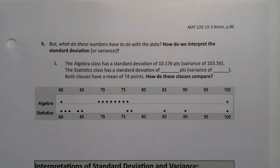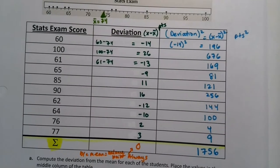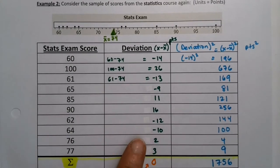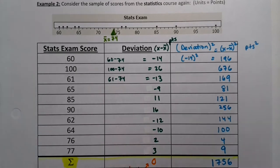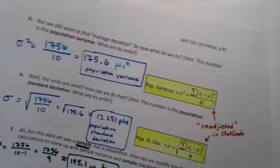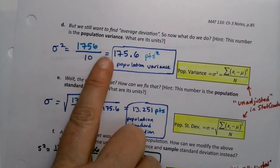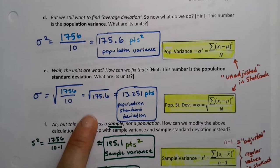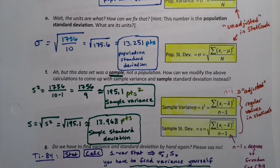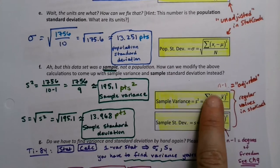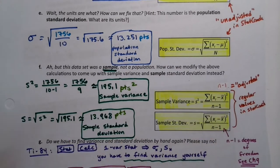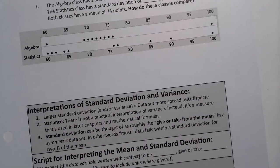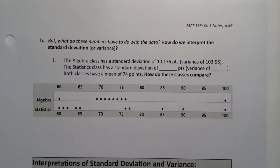We found all these numbers, but what do they mean? What do these numbers have to do with our data? So we have these stats exam scores. We found the distance from the mean. We couldn't add them up — well, we could, but it didn't get us anywhere. So we squared them all, and then we divided by how many there were. But because we squared them, it got us something not quite what we want, so then we took the square root. Then we realized that's for a population, so we adjust by dividing by n minus one. But what are those numbers meaning? How do we interpret the standard deviation?